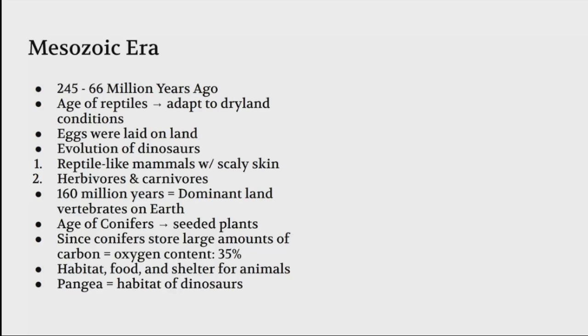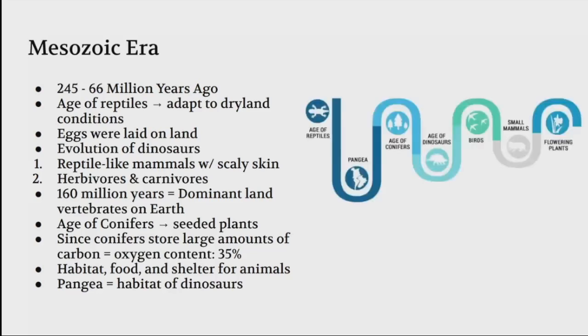We had reptile-like mammals with scaly skin, herbivores and carnivores. For 160 million years, the dominant land vertebrates were on Earth. Then you have the age of conifers, which are seeded plants. Since conifers store large amounts of carbon, oxygen content became 35%, and there is habitat, food, and shelter for animals. We also have Pangaea, which was the supercontinent and habitat of dinosaurs.